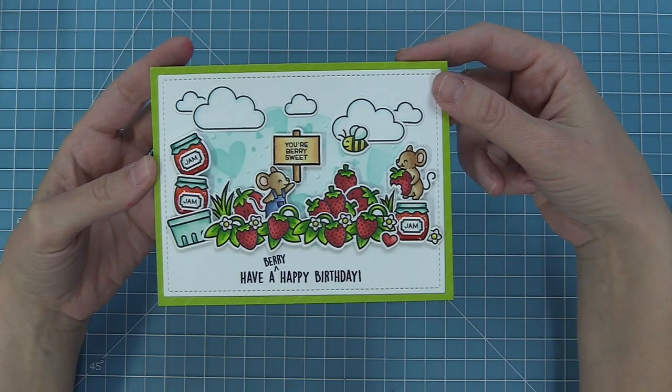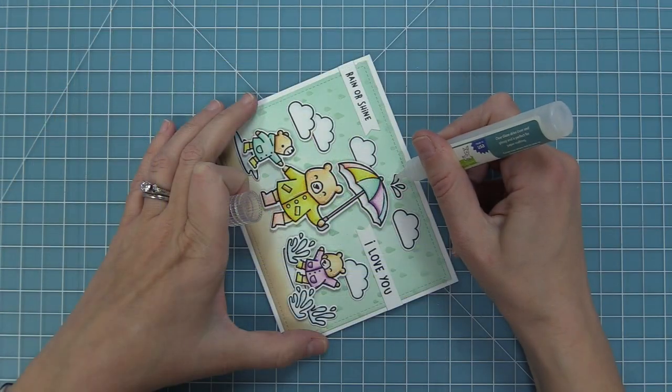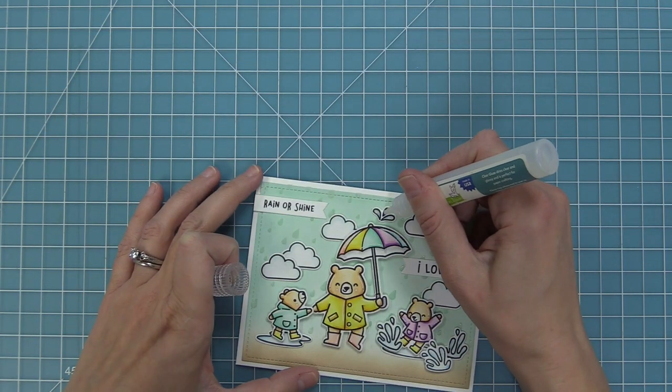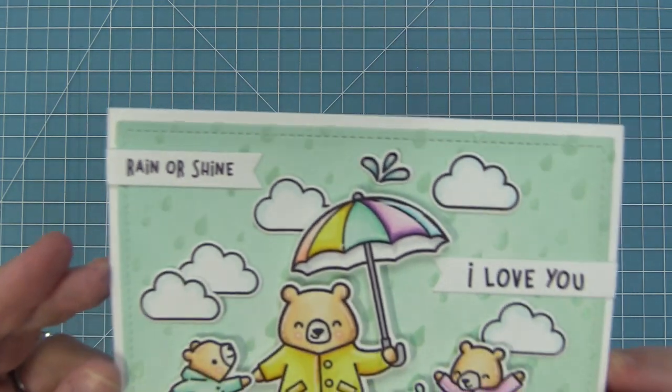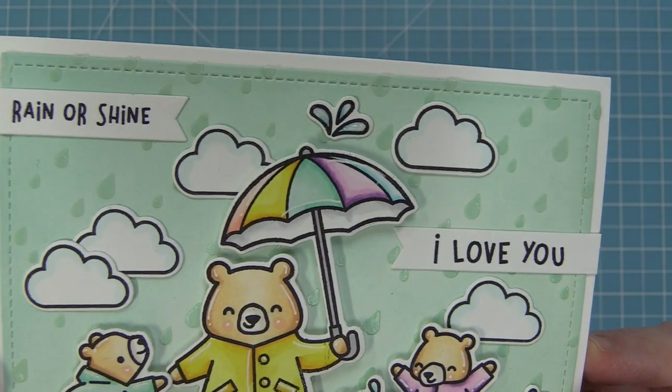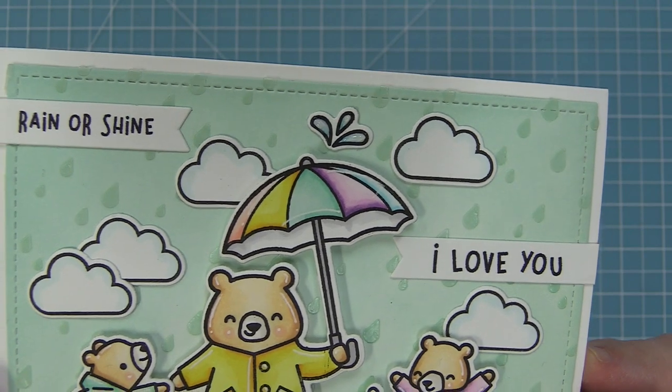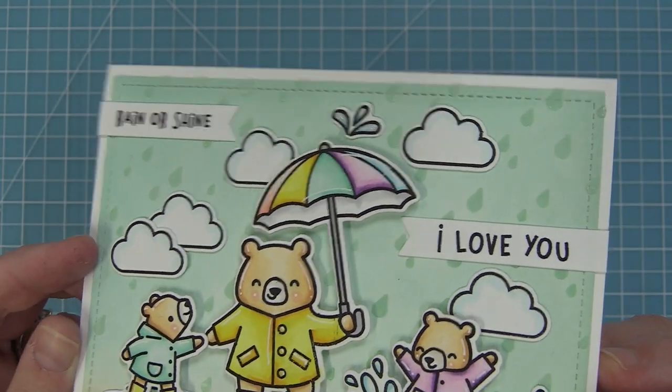It's also really fun to use the clear glaze to highlight smaller areas. So in this case I did the little raindrops on top of the umbrella. It also looks really cute over little animal noses or maybe over a tiny strawberry or things like that. So you can imagine all the cool and fun ways that you can use it.